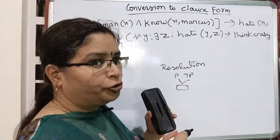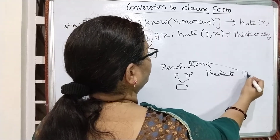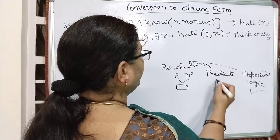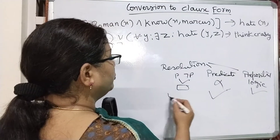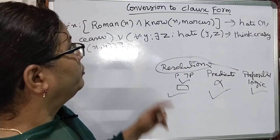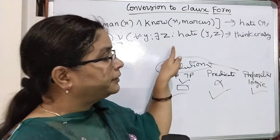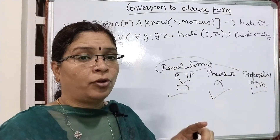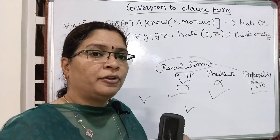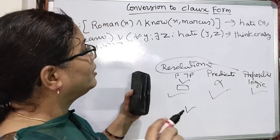That is what resolution means, and we completed this in our previous sessions. Resolution can be done in two ways: one is predicate logic and another is propositional logic. Propositional logic resolution is already complete; now we are going to cover predicate logic resolution. Before going to the resolution, we have to consider conversion to clause form — you have to convert whatever is given into a simple disjunctive form like this.